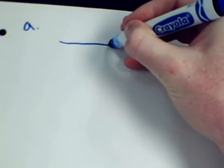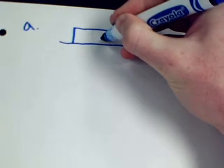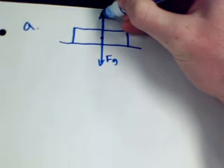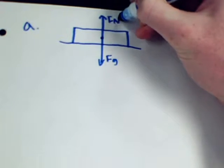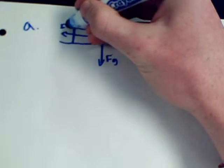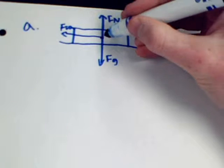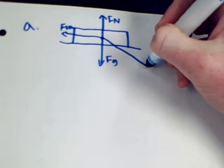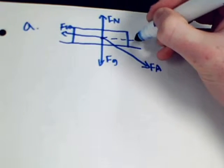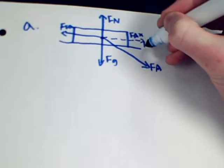The first step we have to take is make a free body diagram. When you make a free body diagram, you want to be sure you label everything. So we're putting down everything: we have the force of gravity, we have the normal force, we have the force of friction, and we have the force applied. We also have the force applied in the x and y directions.